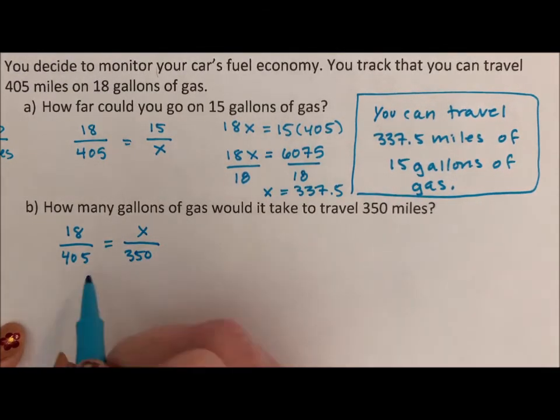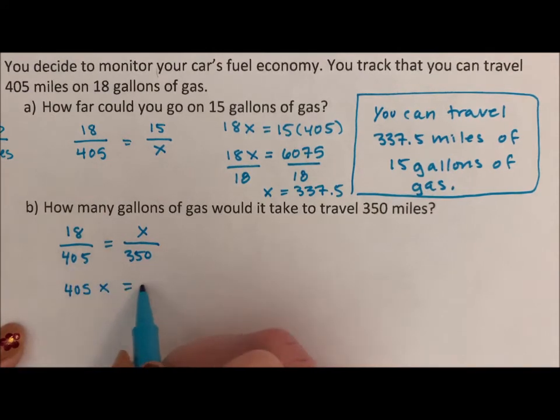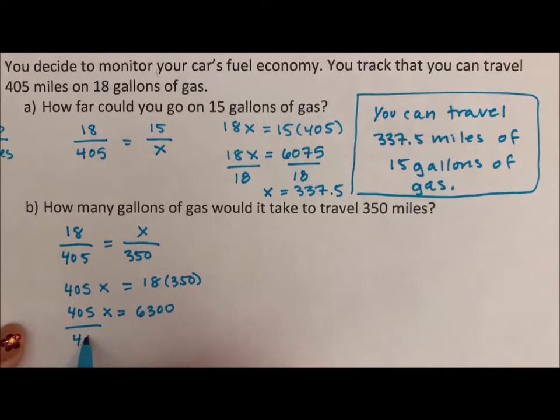So when we cross multiply, now we have 405x equals 18 times 350. 405x is equal to 6300 divided by 405.